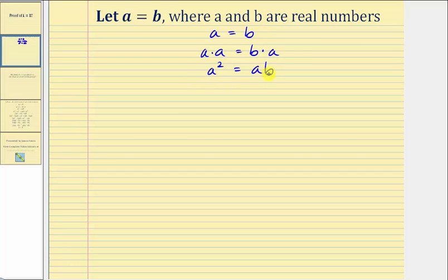Now for the next step, we'll subtract B squared from both sides of the equation. So we'll have A squared minus B squared equals AB minus B squared.